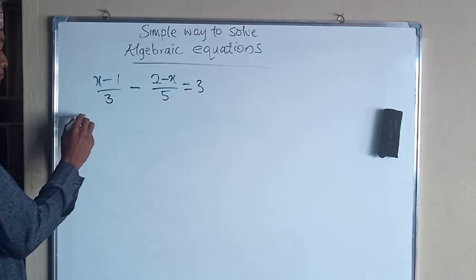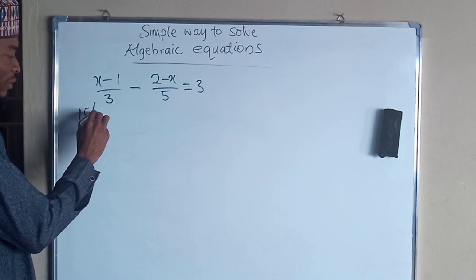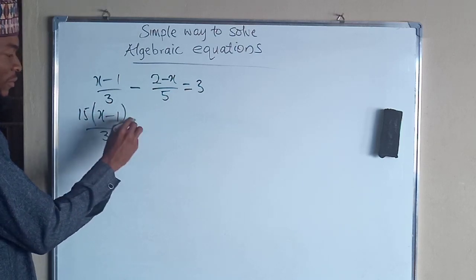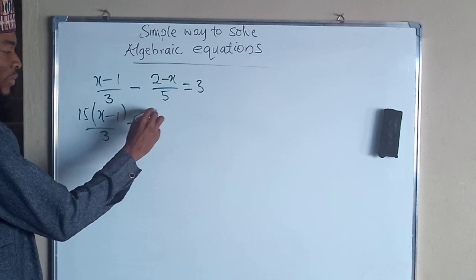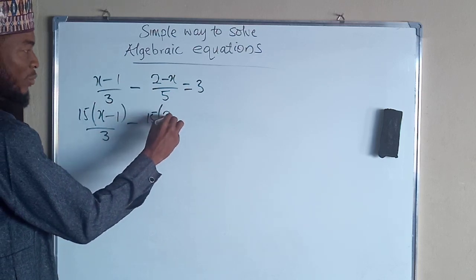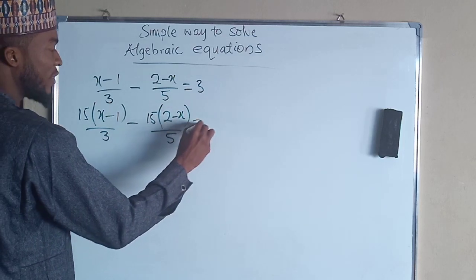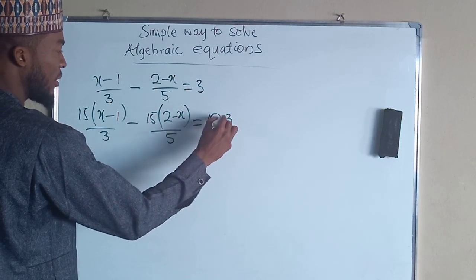So that we have 15 multiplied by x minus 1 divided by 3 minus 15 in the bracket of 2 minus x divided by 5. And all of this equals to 15 times our 3.